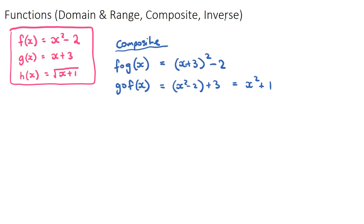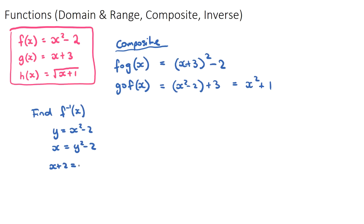Finally, to find the inverse of a function, written as f to the negative one of x, we first write the function as y equals x squared minus two. The first step is always to swap x and y, giving x equals y squared minus two. Then we use algebra to make y the subject: add two to both sides to get x plus two equals y squared, then square root both sides to get y equals the square root of x plus two. This is our inverse function.